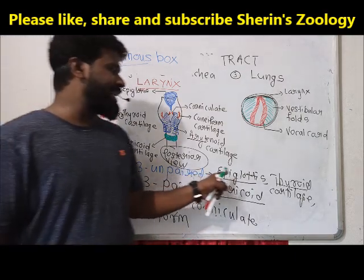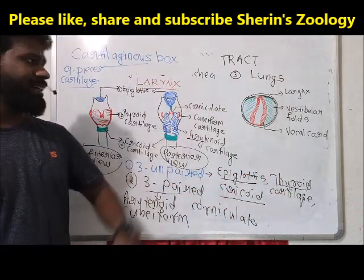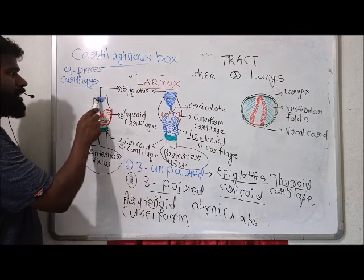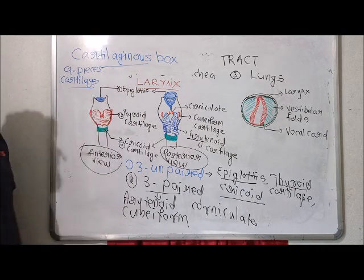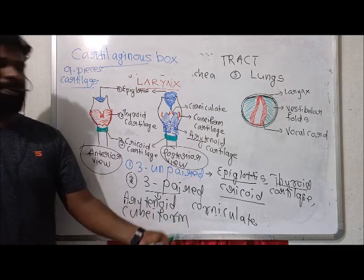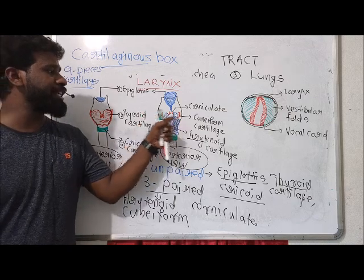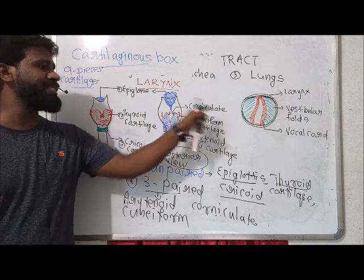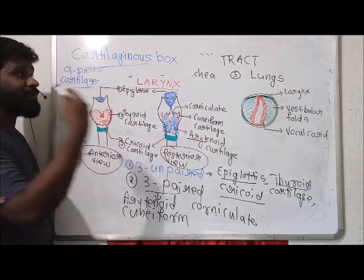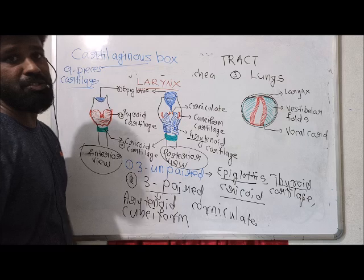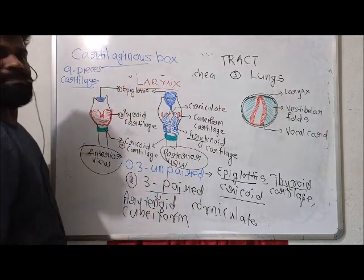To summarize: unpaired cartilages are epiglottis, thyroid cartilage, and cricoid cartilage. Paired cartilages are arytenoid cartilage, cuneiform cartilage, and corniculate cartilage. These form the paired cartilages of the larynx, making it a cartilaginous box.